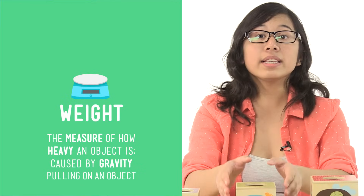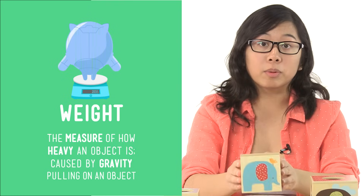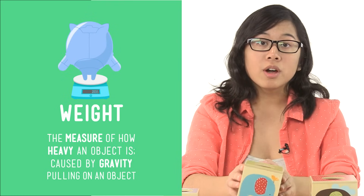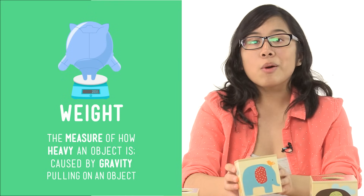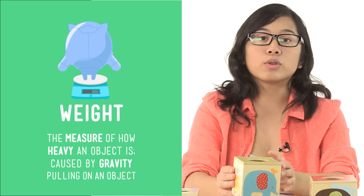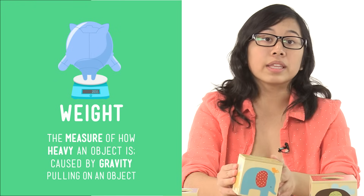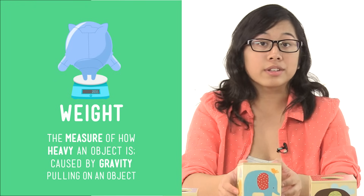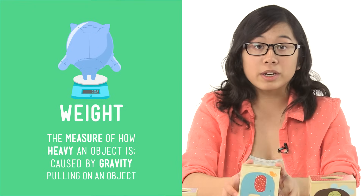Finally, weight is another measurable property of matter. Weight just tells us how heavy an object is. When you go to a doctor's office and they ask you to stand on a scale, they're using that scale to measure your weight. Got it? Good.